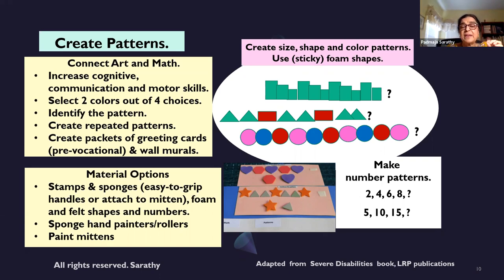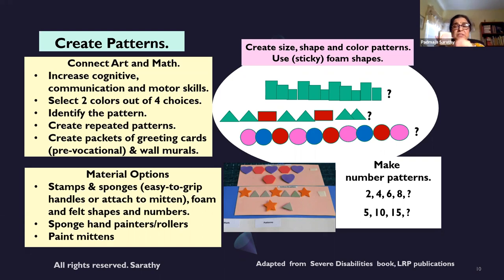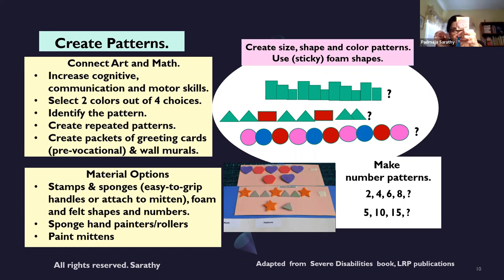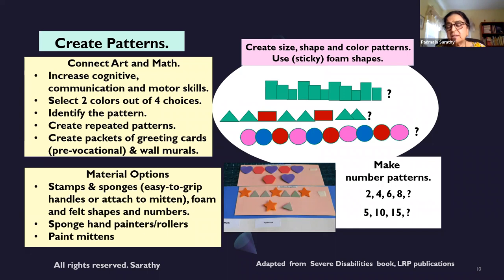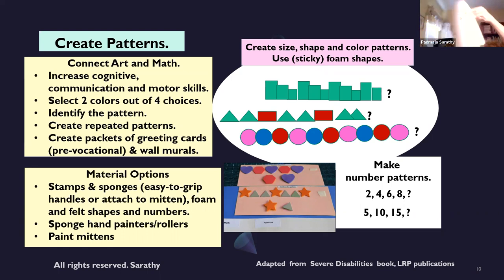You can use stamps attached with Velcro to a craft stick — even if students do not have precise fine motor control, you can insert it in their hand and they can stamp on the paper. Students can make patterns using these stamps, and also create number patterns. You can attach stamps with Velcro and the student stamps repeated patterns.